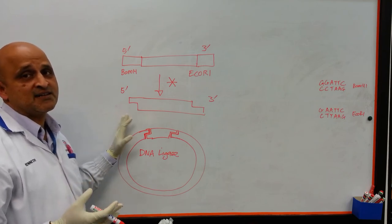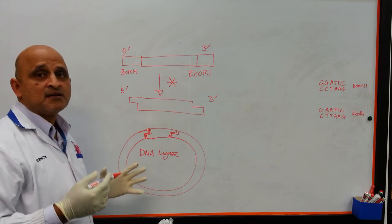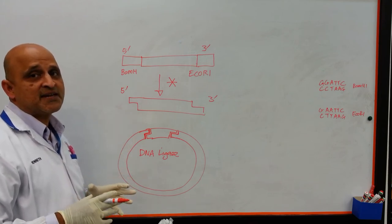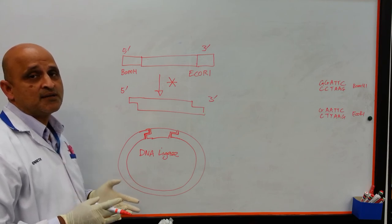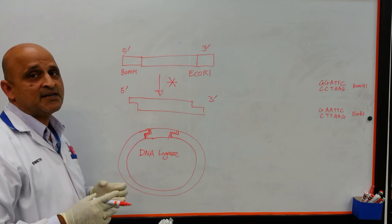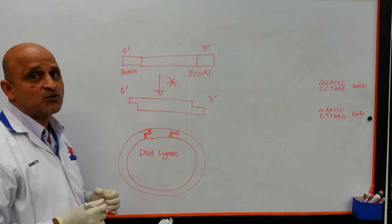However, over digestion, for instance extension of the digestion time to more than 12 hours, can lead to non-specific activity and the complete digestion of the DNA molecule. This renders the DNA molecule unsuitable for downstream processes such as cloning.